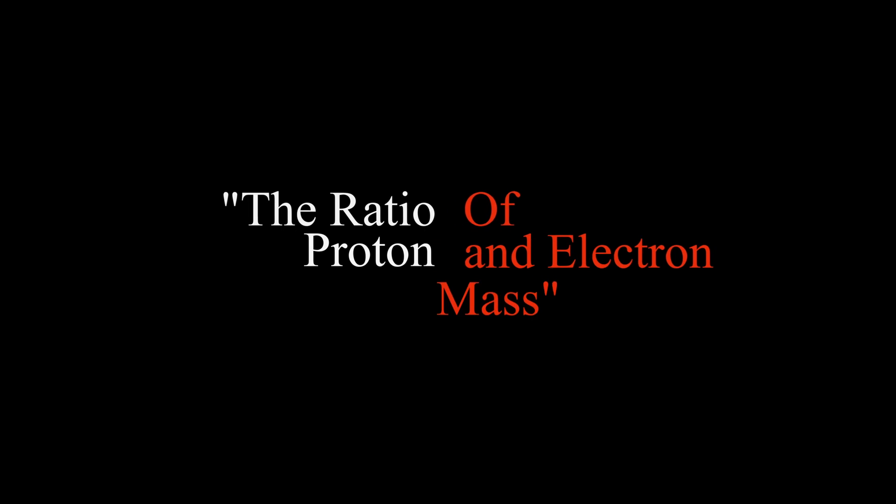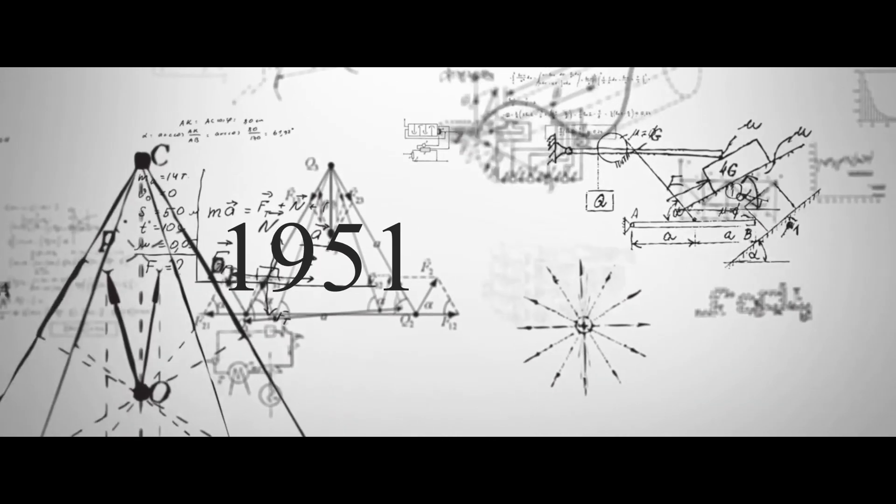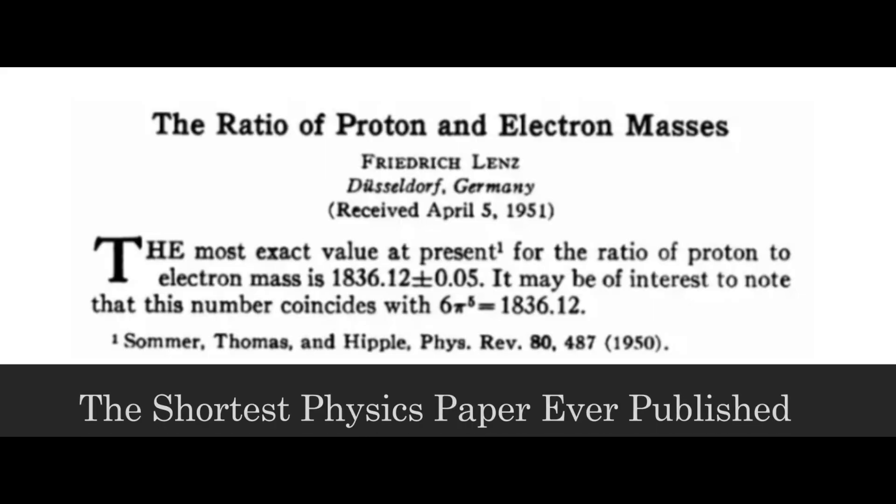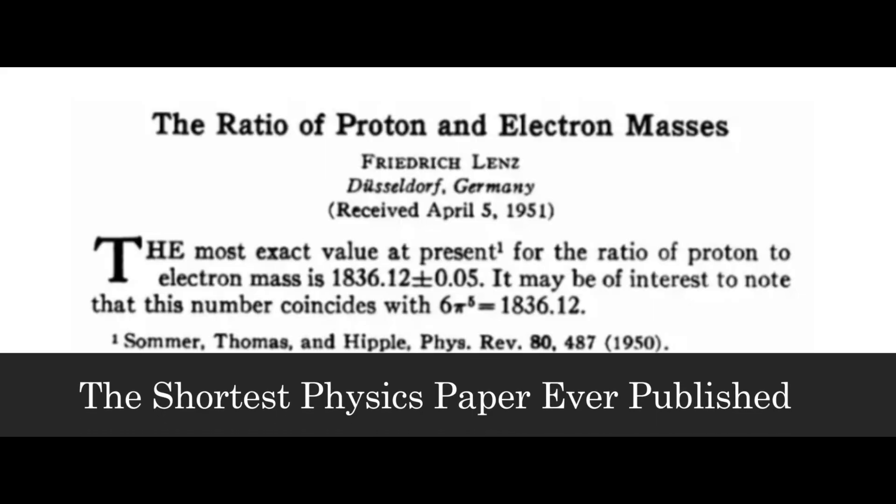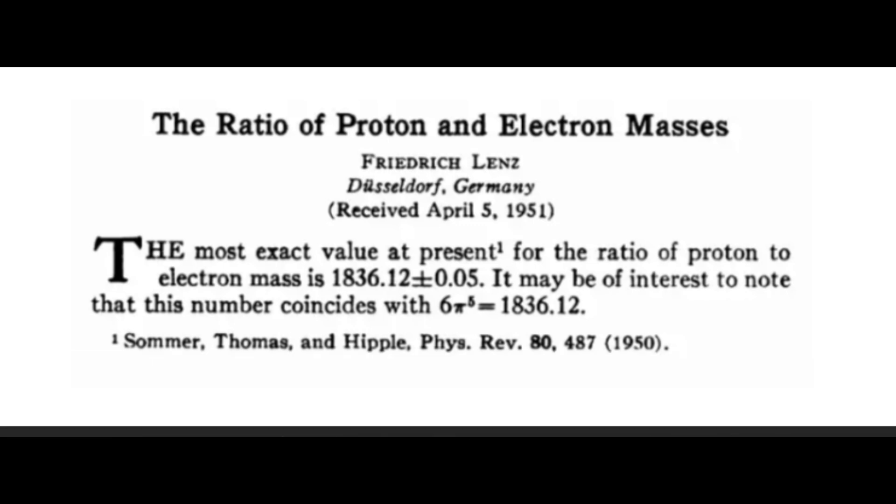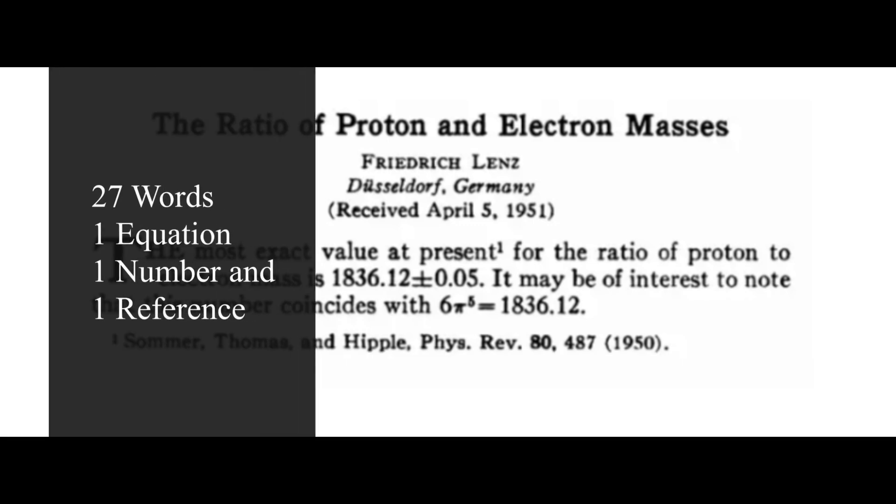The paper is titled The Ratio of Proton and Electron Mass, published in 1951 by Frederick Lenz. The paper falls under the category of one of the shortest physics papers ever published, as it contains just 27 words, one equation, one number and one reference.